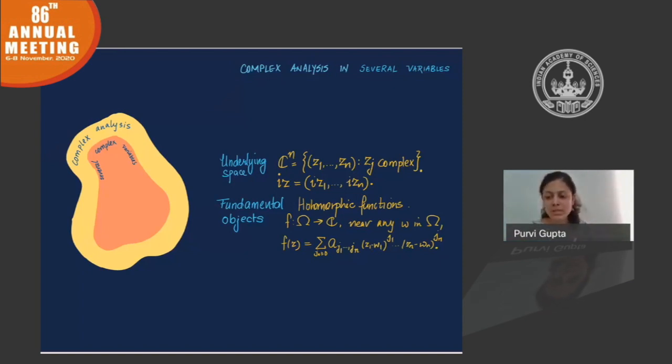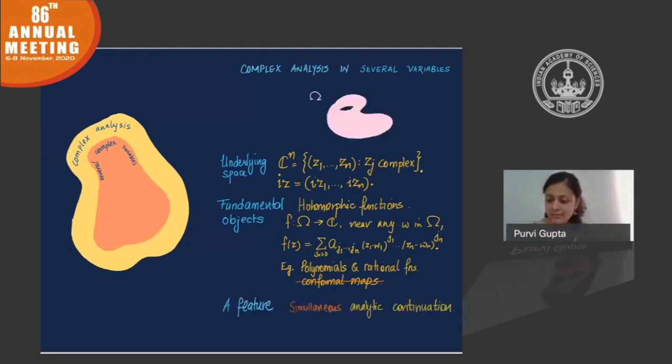We continue to have certain features, but we also lose certain other features. You can still think of polynomials and rational functions as good examples, but we lose conformality. We also continue to have analytic continuation, but a sort of new remarkable phenomenon arises. This phenomenon has dominated some aspects of this theory. It's a very important part of this theory.